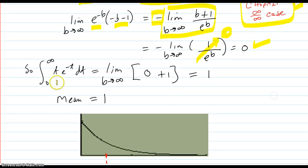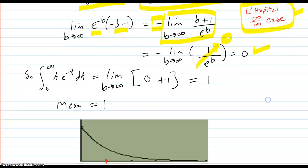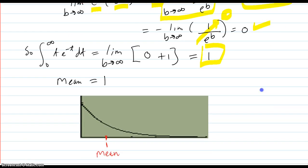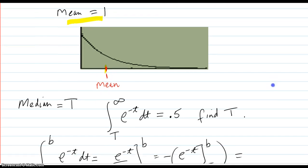So our original integral equals the limit of zero plus 1, because you had the one right here, and that equals 1. So the mean is 1 and that falls right here. That's the average value.